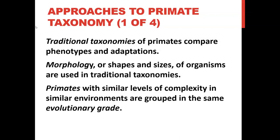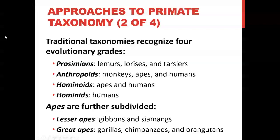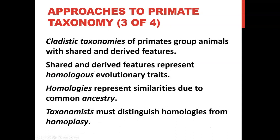Traditional taxonomies recognize four evolutionary grades: prosimians, anthropoids, hominoids, and hominids. Apes are further subdivided into lesser apes and great apes. Now, cladistic taxonomies — a more modern form of grouping primates — group animals with shared and derived features. Shared and derived features represent homologous evolutionary traits. Homologies represent similarities due to common ancestry.